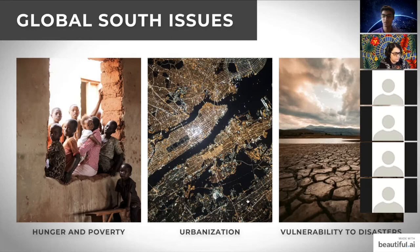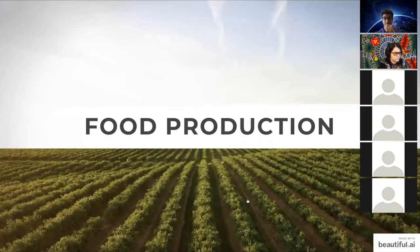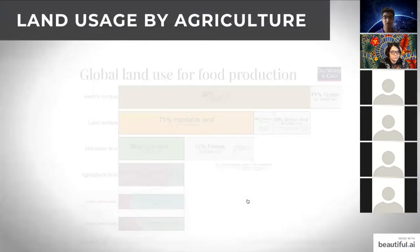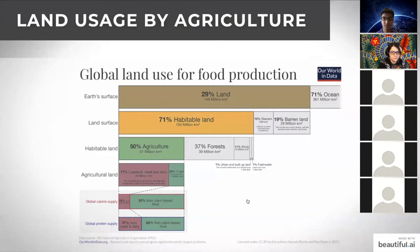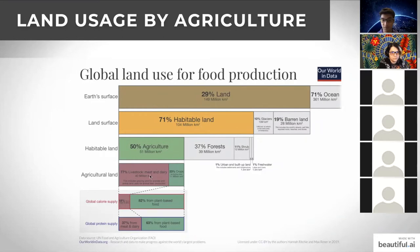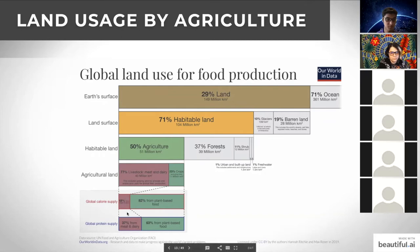Looking at global land use for food production: Earth's surface is 30% land, 70% ocean, and 71% of that land is habitable — about 104 million square kilometers. Of that habitable land, 50% is used for food production. Interestingly, of that 50%, 77% is used for livestock — meat and dairy — while only 23% grows crops, vegetables, and fruits. Yet 80% of global calories and 60% of protein come from plant-based food. Livestock land represents only 18–30% of the protein and calorie supply.